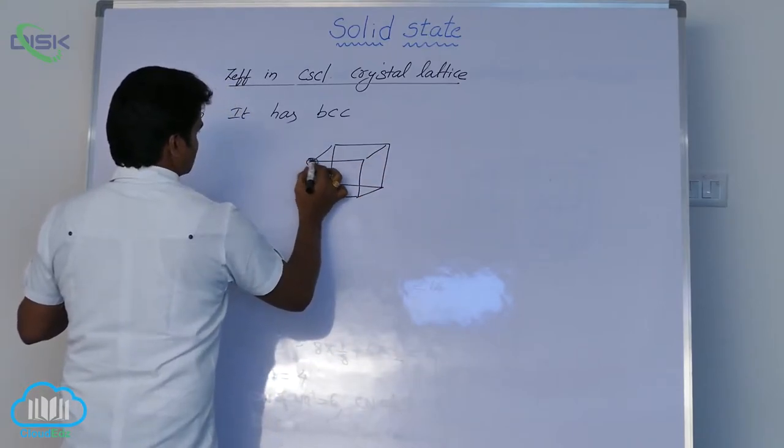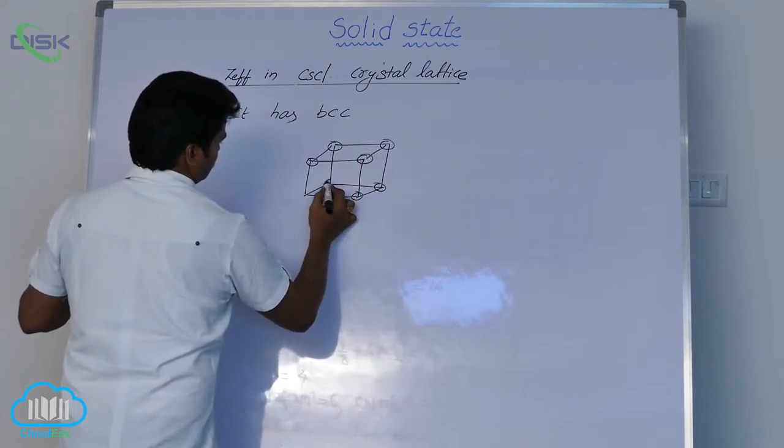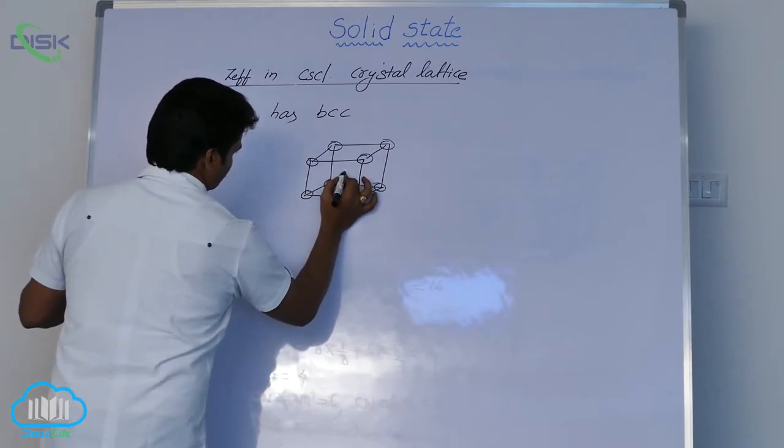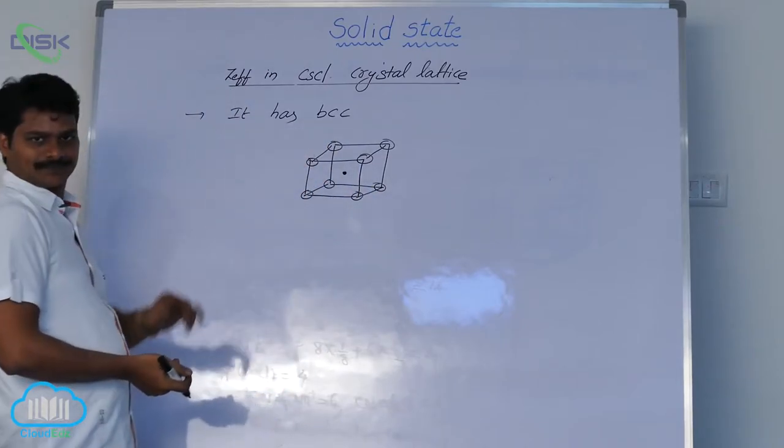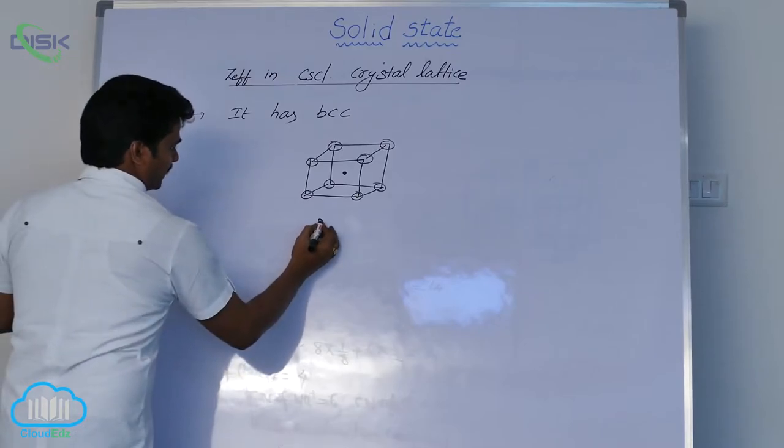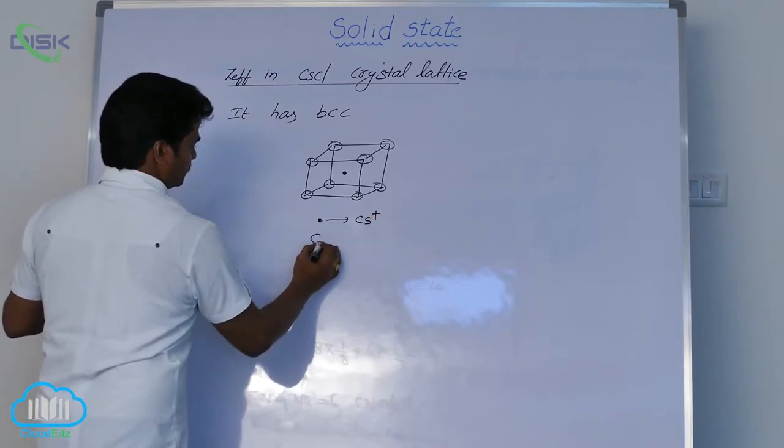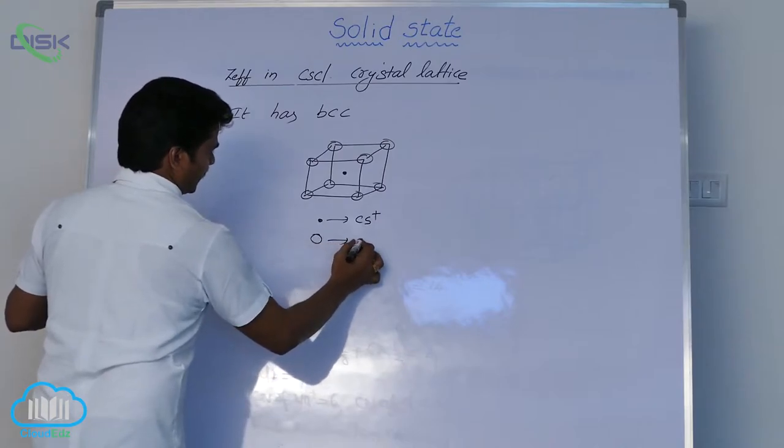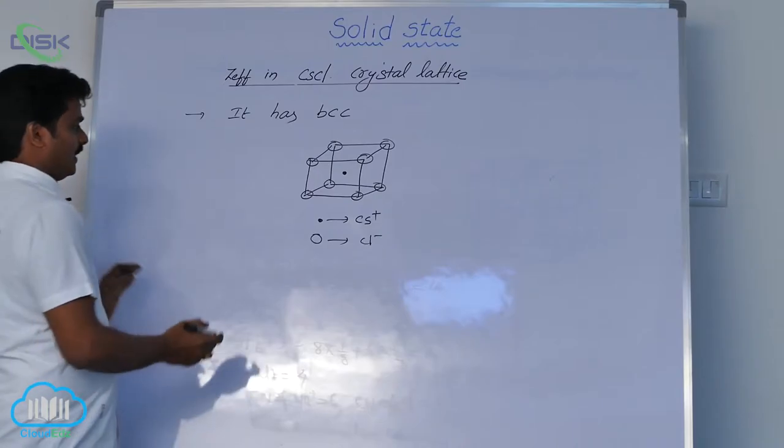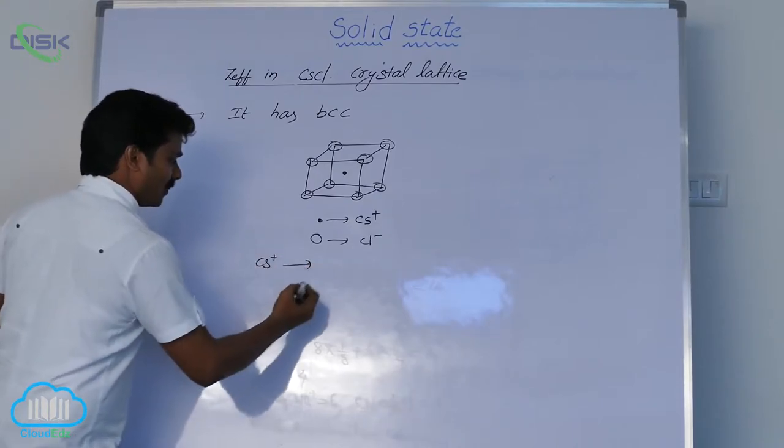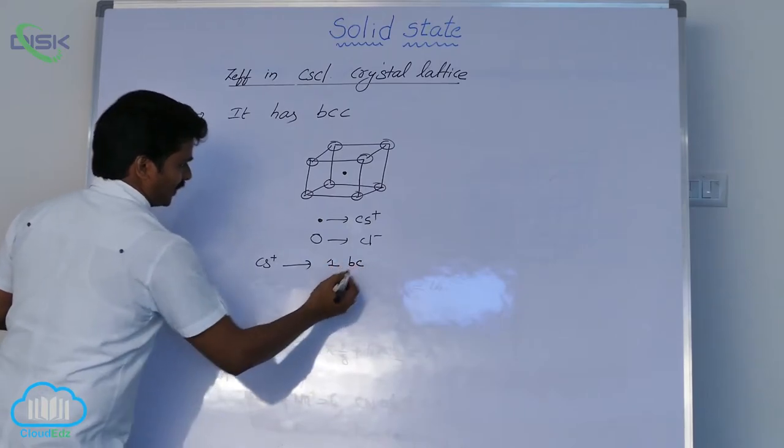Chloride ions occupy the corners and cesium ions occupy the body center. So cesium ion is at the center, chloride ions at corners. Now, cesium ions per unit cell - how many lattice points does it have? One body center only.